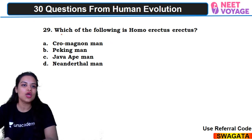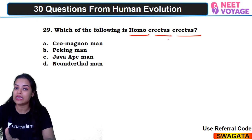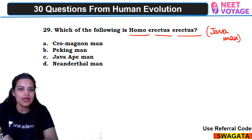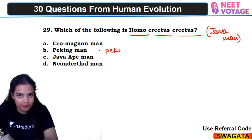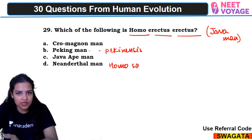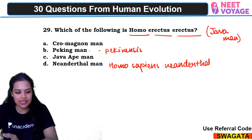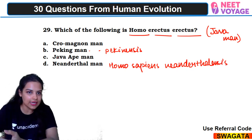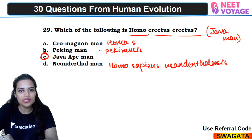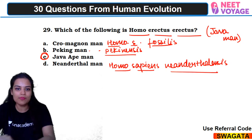Twenty-ninth question: which of the following is Homo erectus erectus? Homo erectus erectus is the scientific name of Java man. Homo erectus pekinensis is the scientific name of Peking man. Neanderthal man belongs to Homo sapiens — Homo sapiens neanderthalensis. Cro-Magnon man's scientific name is Homo sapiens fossilis. So C — Java man — would be the right answer. Ram Prasad answered correctly.